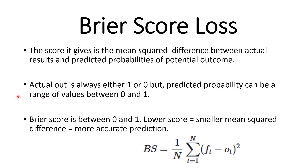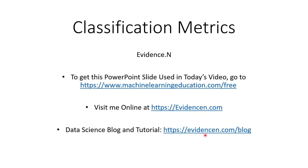Brier score loss. The Brier score gives the mean squared difference between actual results and predicted probabilities of a potential outcome. The actual result is either one or zero, but the predicted probability is any number between zero and one. The Brier score is a value between zero and one, and a lower score means a smaller mean squared difference, which leads to more accurate predictions — so you want a lower Brier score.